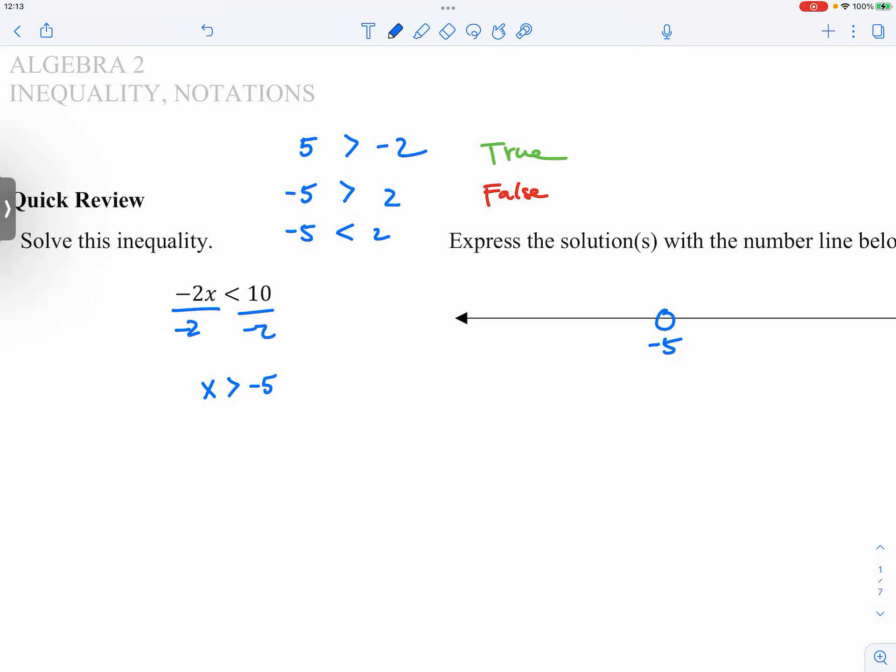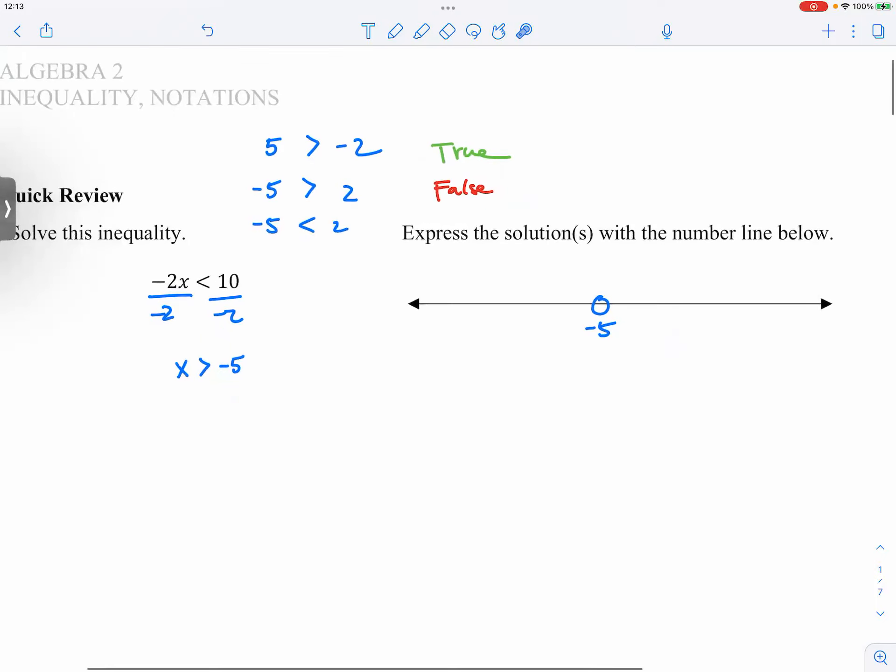Because I can just say it out loud. Just translate this inequality notation out loud with a complete sentence. And I would say x is greater than negative 5. So guess what? We are highlighting the right-hand side, right?